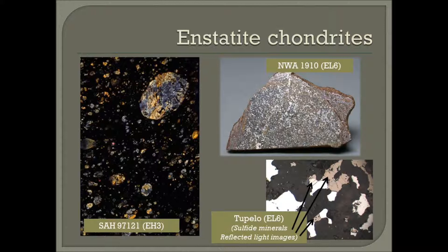The enstatite class has one clan consisting of two groups, EH and EL, based on mineralogy and bulk chemistry. The H and L indicate metallic iron content as relatively high or low. Enstatite chondrites are the rarest and most reduced of the chondrite classes.